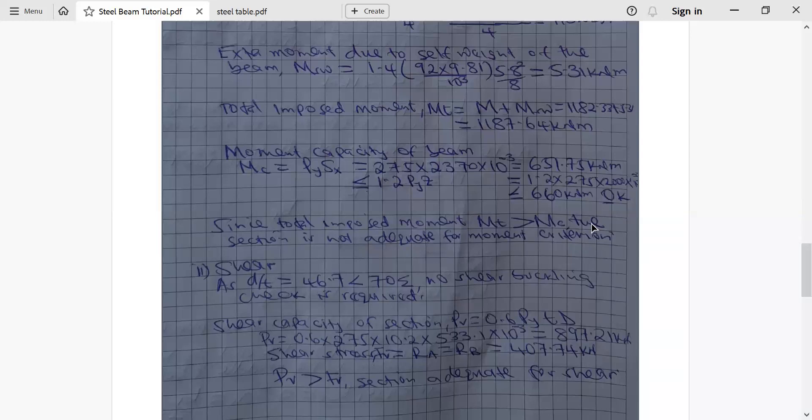The shear stress FV is the same as reaction A, which is equivalent to reaction B, which will be equivalent to 407.74 kilonewton. This implies that what our beam can carry is 897.21 kilonewton. What is being subjected on the beam is 407.74 kilonewton. Hence the section is adequate because it has the capacity to carry more than what it's being subjected to. So when we check for shear, the section is adequate for shear.